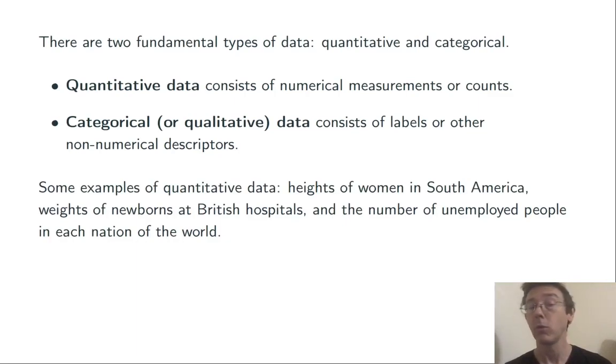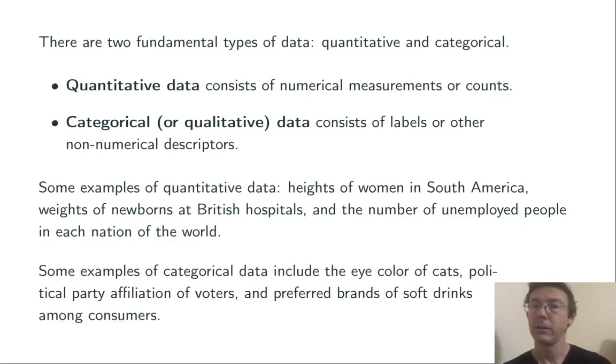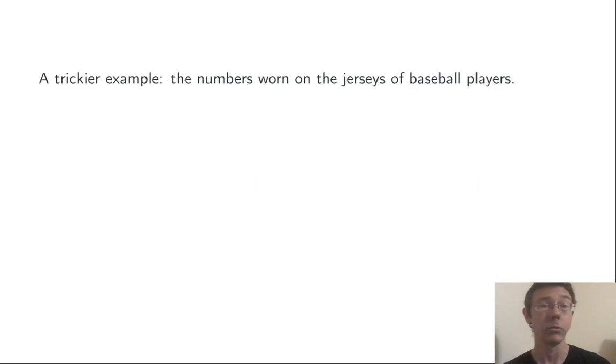Some examples of quantitative data: heights of women in South America, weights of newborns at British hospitals, numbers of unemployed people in each nation of the world. Some examples of categorical data would be eye color of cats, political party affiliations of voters, and preferred brands of soft drinks among consumers.